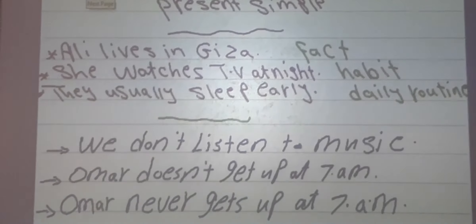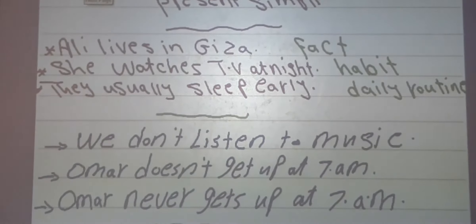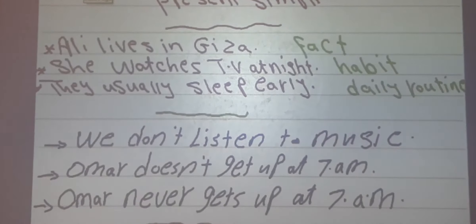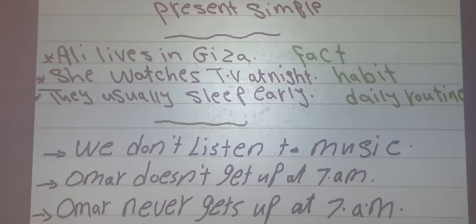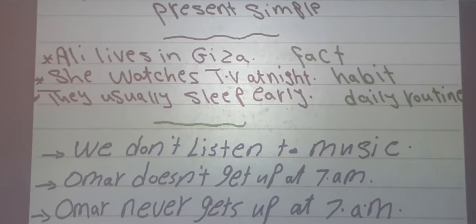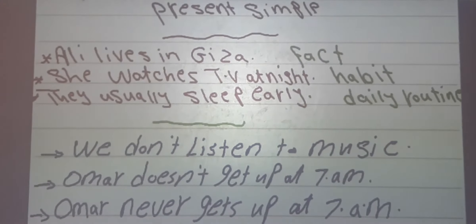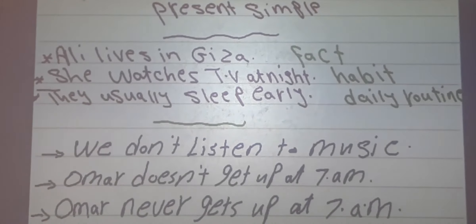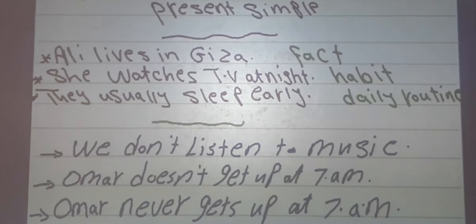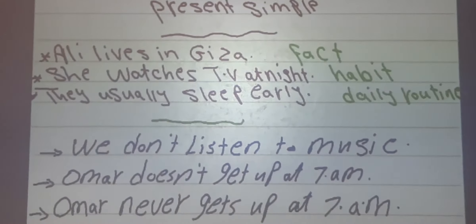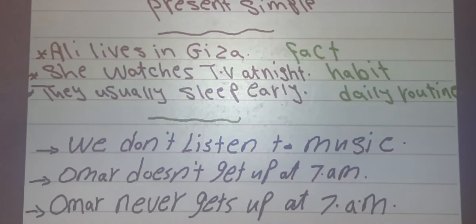Let's see our grammar. Number 1: Present Simple. We use the Present Simple to talk about facts, habits, and daily routines. For example: Ali lives in Nagisa — this refers to a fact. She watches TV at night — it refers to a habit. They usually sleep early — this is a daily routine sentence.